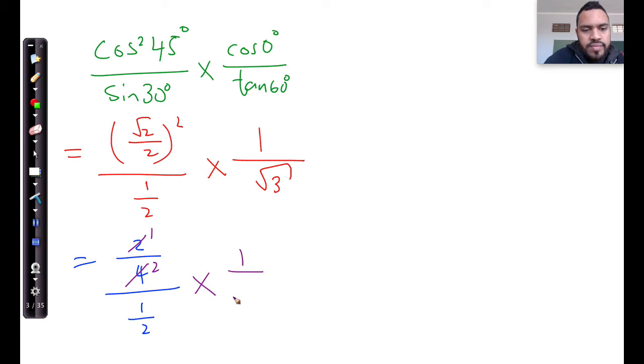And 1 over root 3—this is a half divided by a half, which is just 1, multiplied by 1 over root 3. And that's exactly the same as saying 1 over root 3, which is equivalent to root 3 over 3, if you want to rationalize the denominator.